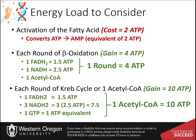Using our conversion factors for FADH2 and NADH listed on the previous slide, we can evaluate how many ATP should be produced with one round of beta-oxidation and one round of acetyl-CoA oxidation in the Krebs cycle. For beta-oxidation, one round will generate 4 ATP molecules. For one acetyl-CoA being oxidized in the Krebs cycle, 10 ATP will be produced.